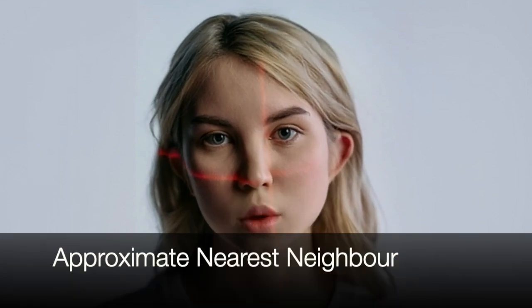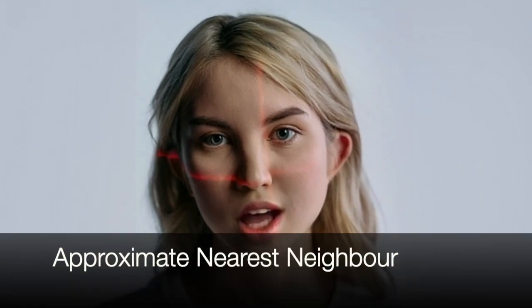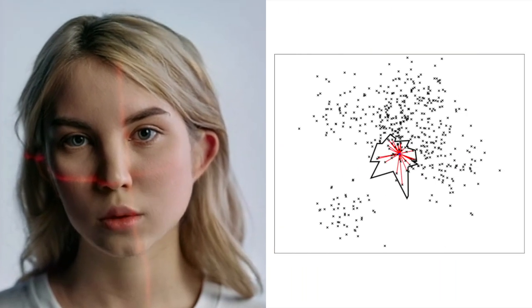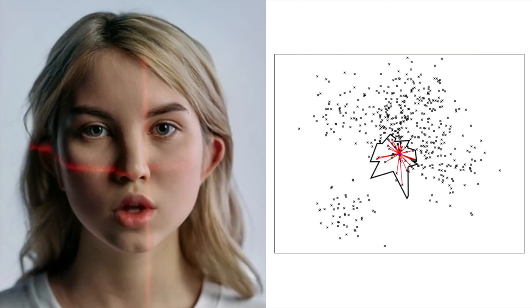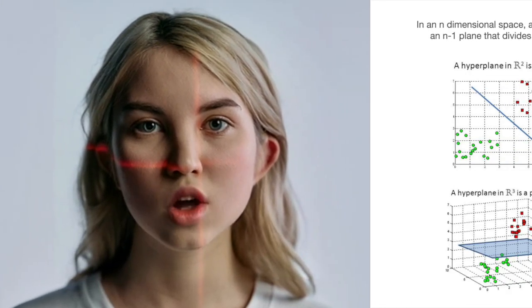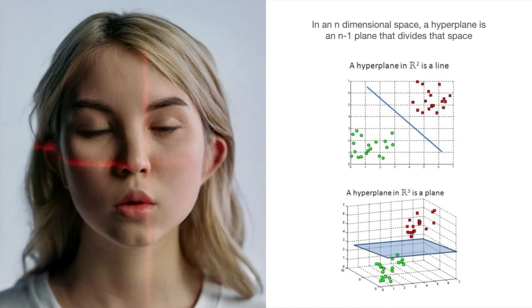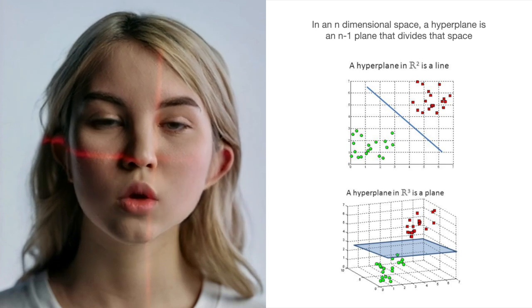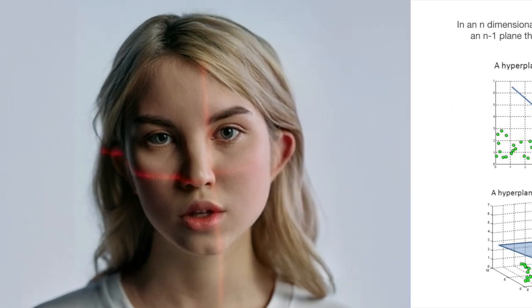Secondly, approximate nearest neighbors algorithms are designed to address the limitations of KNN and provide efficient similarity search in high-dimensional spaces. These algorithms aim to find approximate nearest neighbors without examining every vector in the dataset. ANN algorithms use space partitioning and hyperplane division to efficiently find approximate nearest neighbors.